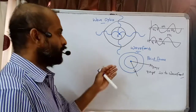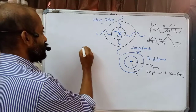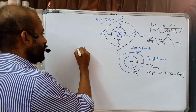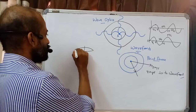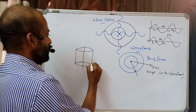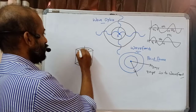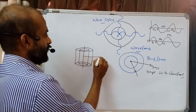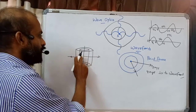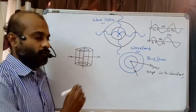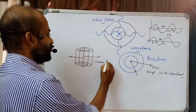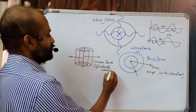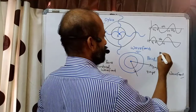Now we will consider a linear source of light. For a linear source, the symmetrical wavefront shape will be cylindrical. We can say concentric cylinders — this is one cylinder, and I can draw another cylinder inside it as a smaller wavefront. The light rays are propagating in this direction. So these cylindrical wavefronts represent the wavefront for a linear source. For a line source, the shape of the wavefront is cylindrical wavefronts.